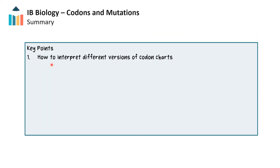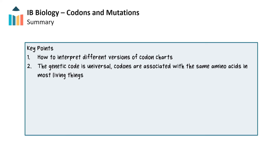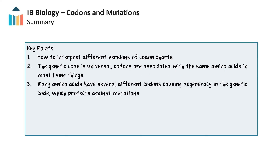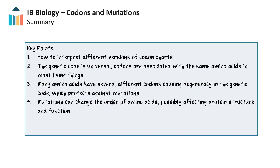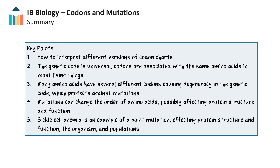In this video, we reviewed how to read two different types of codon charts, both wheel and table formations. We learned that the genetic code is universal — the codons are associated with the same amino acids in most living things. We saw how many amino acids have several different codons that code for them, making degeneracy in the genetic code, which can protect against mutations. We also saw how mutations can change the order of amino acids in a protein, which will change its structure and affect its function. Finally, we looked at sickle cell anemia as an example of a point mutation, and we saw how a single change in the nitrogenous bases of DNA can have an effect on the protein structure and function, which affects the organism and finally entire populations.